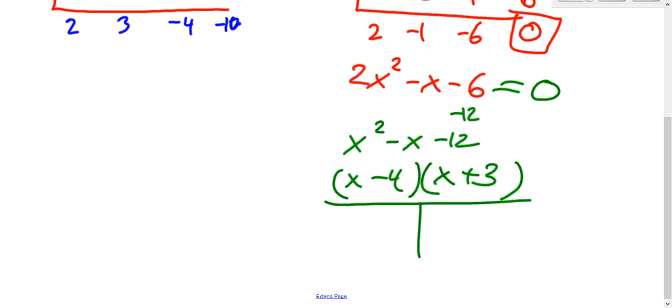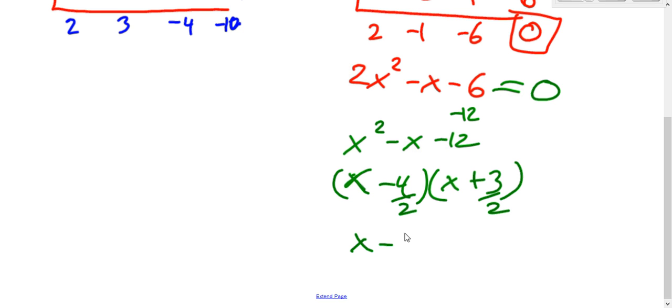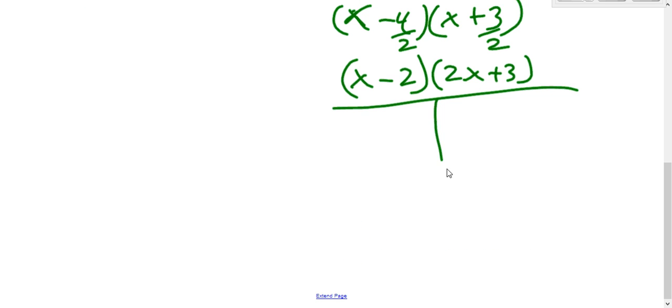Solve it. Nope, don't solve it yet. Since we multiplied by two, we need to divide by two. Reduce, that's x minus two. 2x plus three. Now solve it. X equals two. 2x equals negative three. So x equals negative three over two.